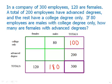Now look down the male row. We have 80 plus blank equals 180. So what has to go in that blank? Obviously 100. There must be 100 males with advanced degrees, so that 80 plus 100 equals 180.